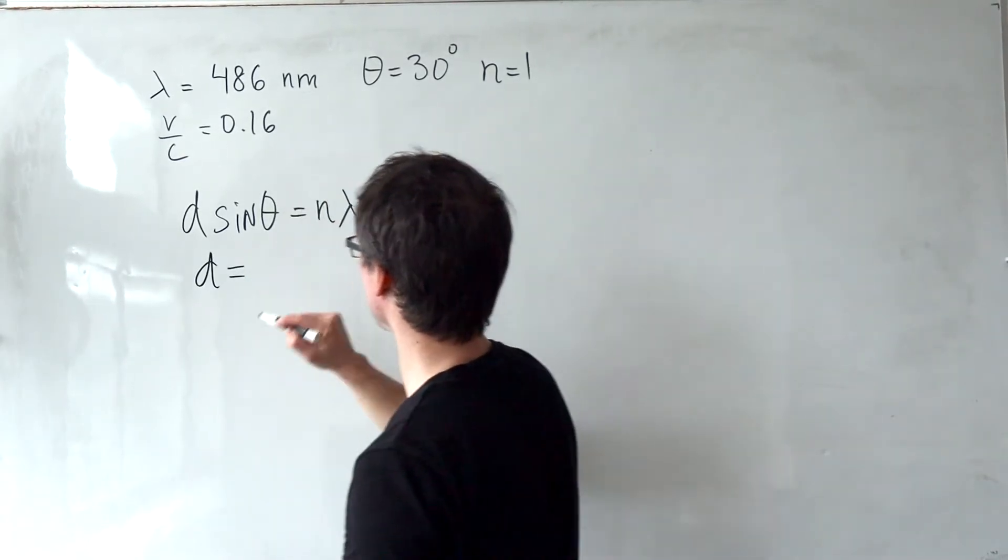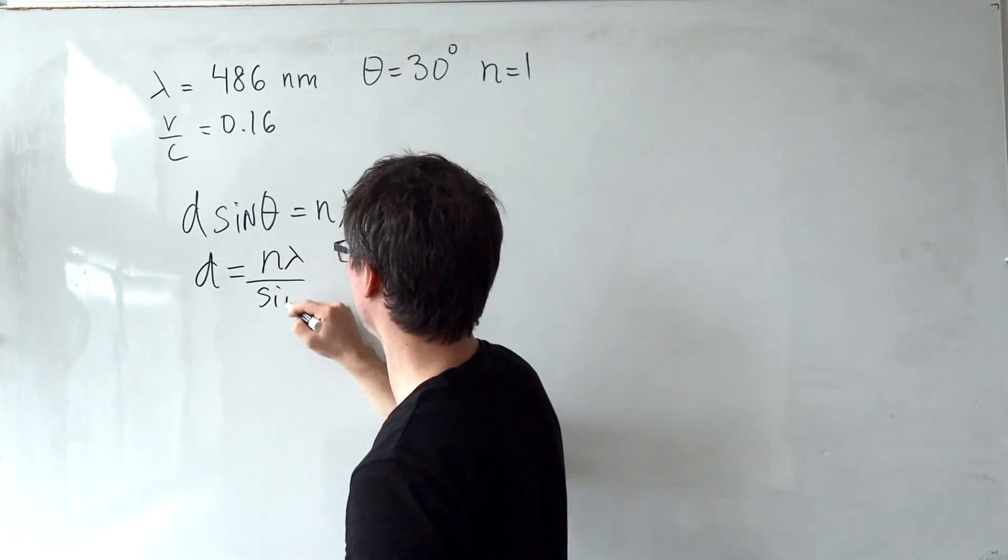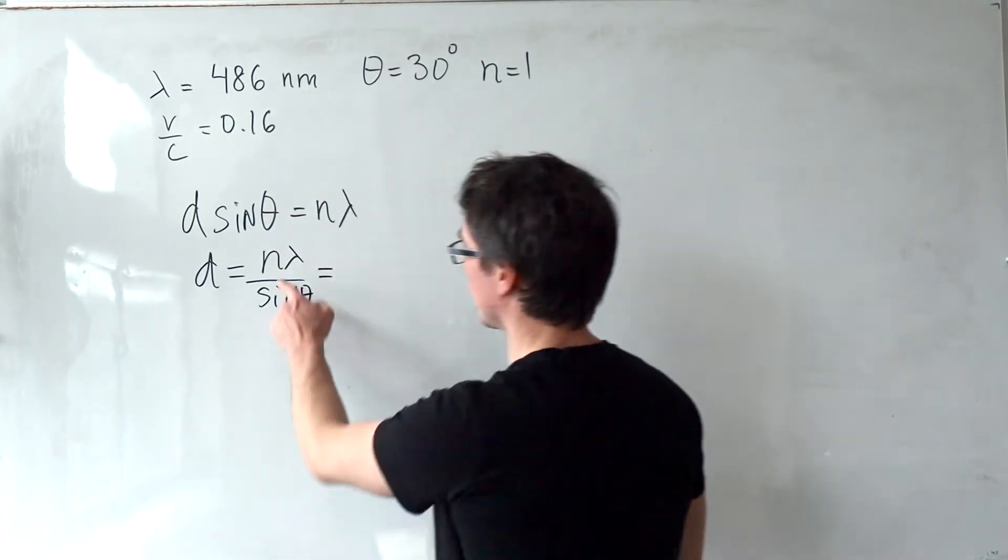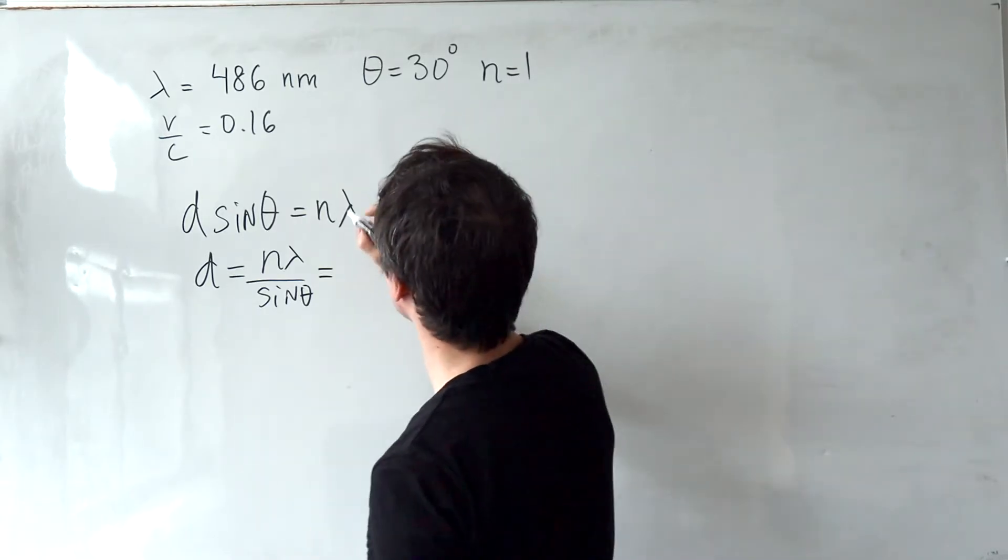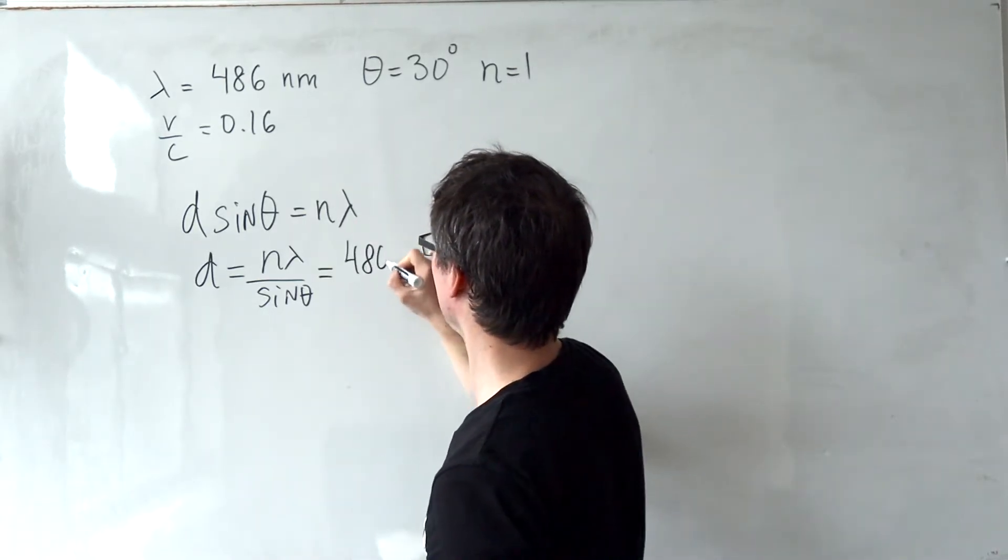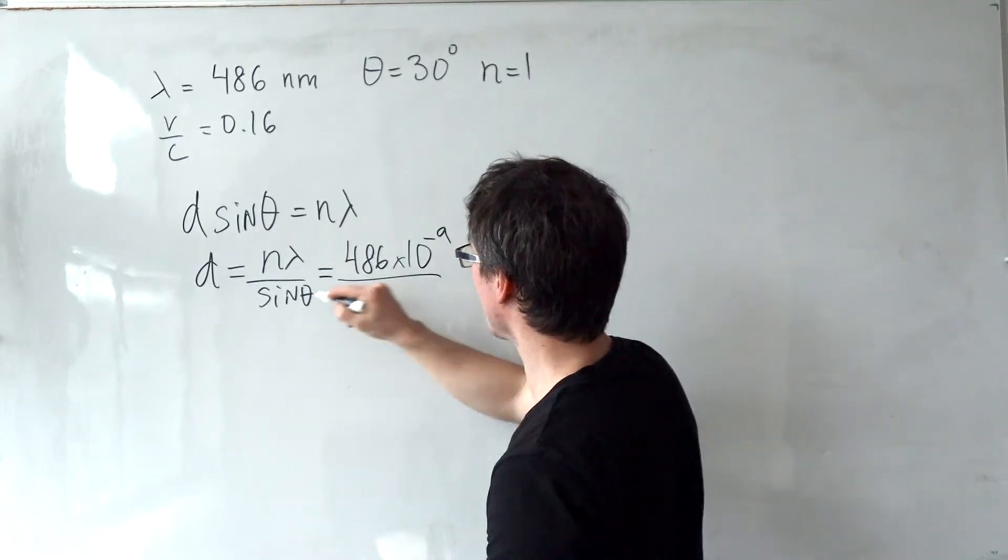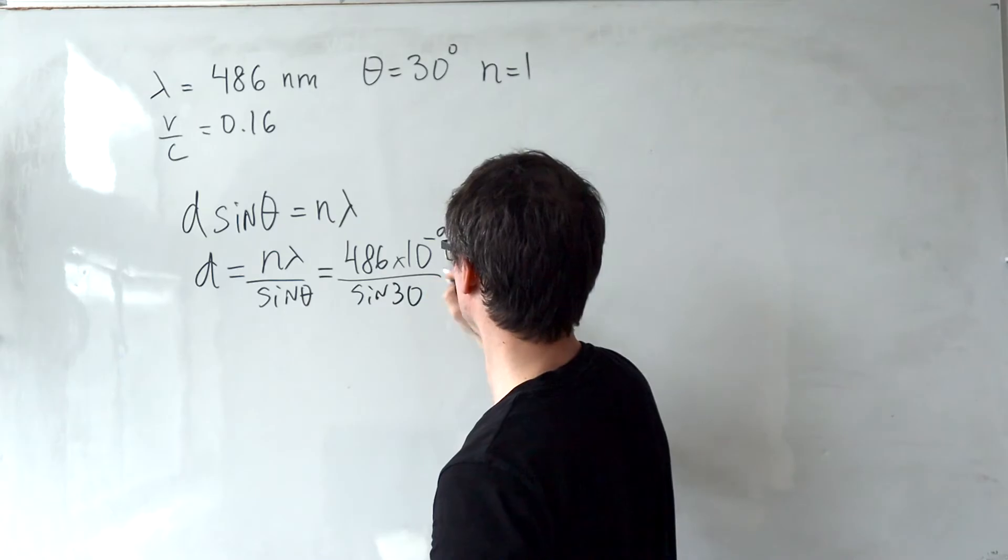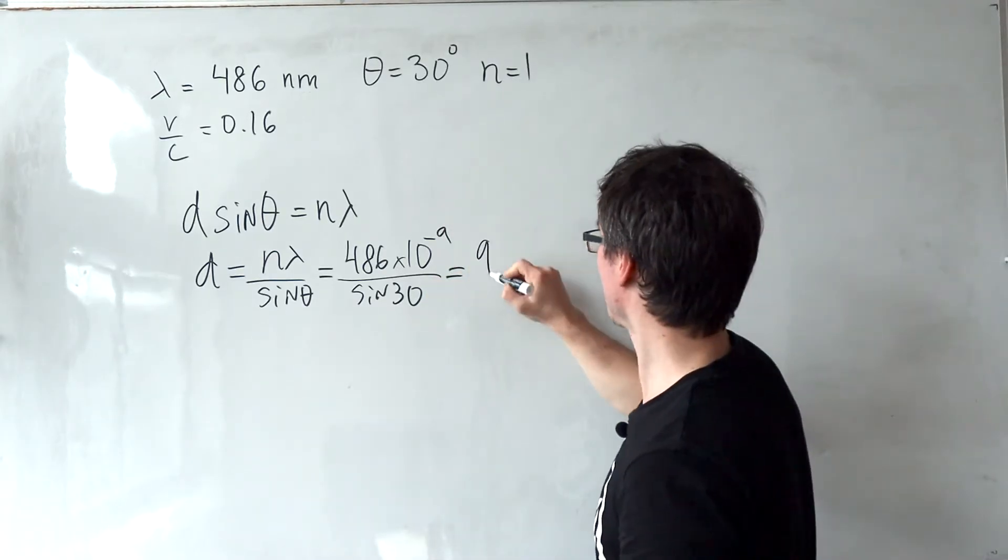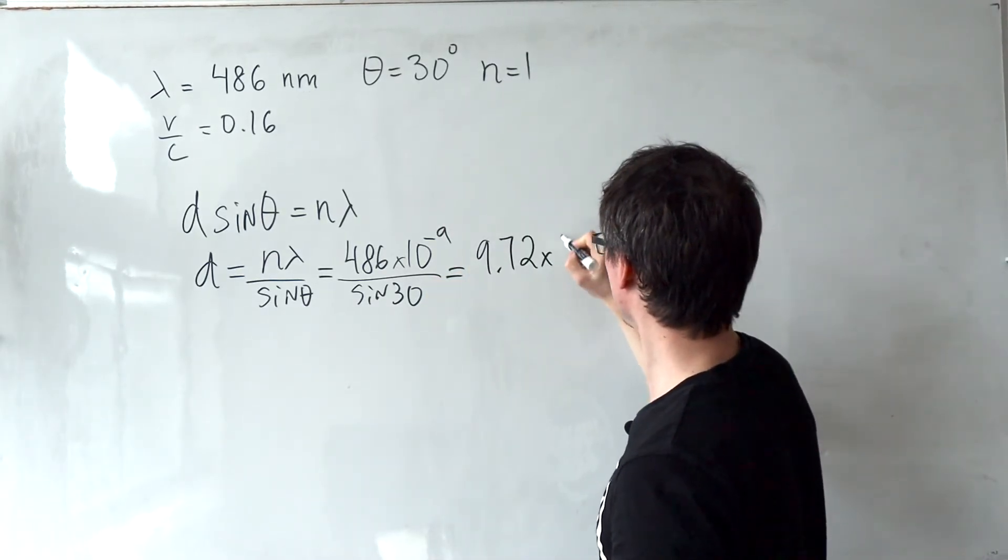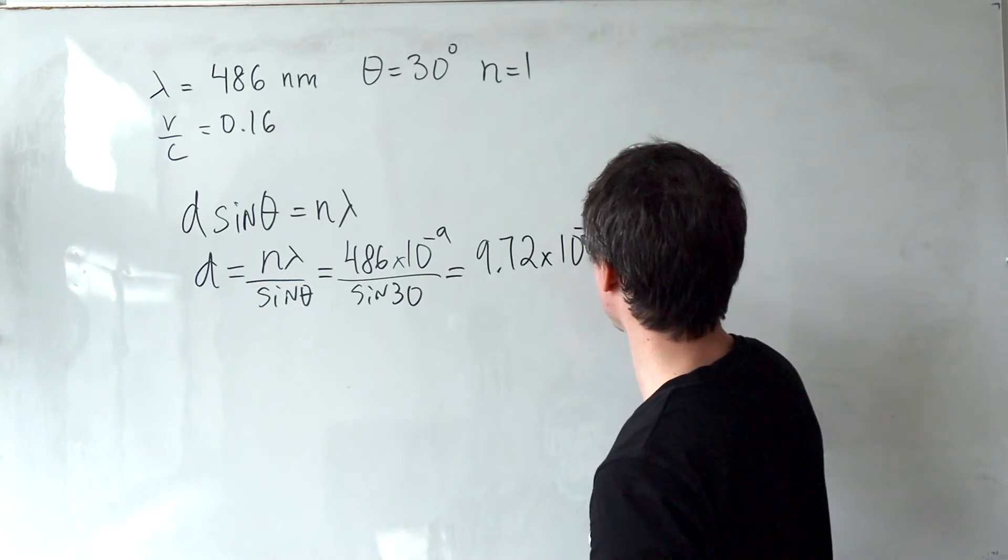This, of course, means that D will be N lambda divided by sine of theta, which is going to be just 1 times the wavelength, which is 486 nanometers times 10 to the power of minus 9 divided by sine of 30, which is just a half. This here will just give me around 9.72 times 10 to the power of minus 7.